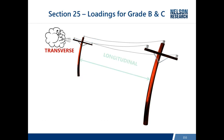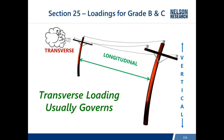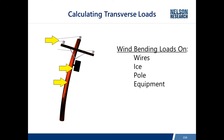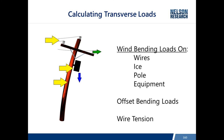Besides transverse loading on a pole, there is longitudinal loading in the direction of the wires and vertical loading from equipment and other weight imposed on the poles. Generally, transverse loading governs — if a pole is strong enough to support transverse wind loads, it is also strong enough to support vertical and longitudinal loads. Transverse loads come from wind on wires, ice, wind on the pole and equipment, equipment offset weight, and wire tension at angles.